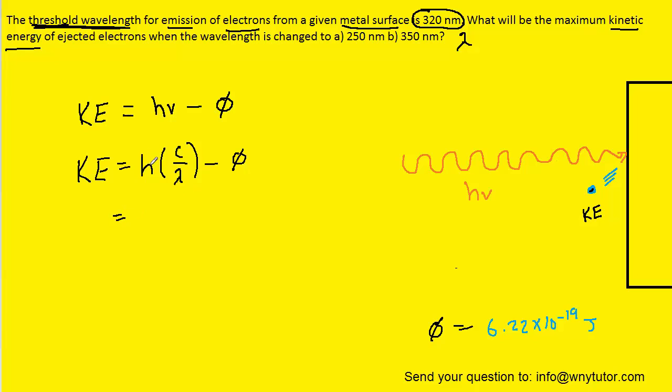We'll fill in the known values for h, c, and the work function. Then the wavelength in part A is given to us as 250 nanometers. Remember that we'll convert that into meters by multiplying by 10 to the minus 9. So let's go ahead and plug in the known values.